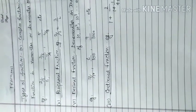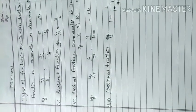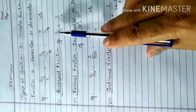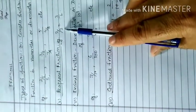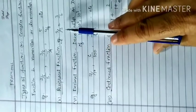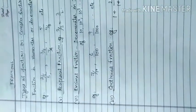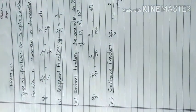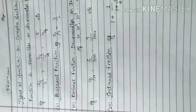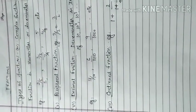Now the fifth type is reciprocal fraction. In a reciprocal fraction, you simply swap the numerator and denominator.